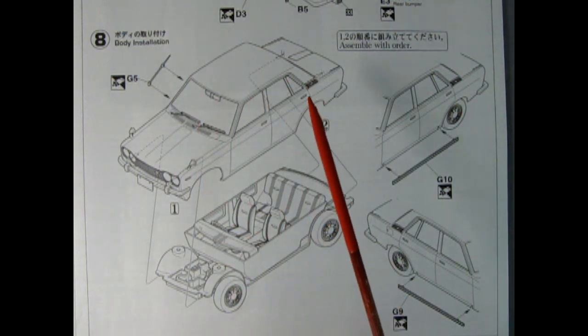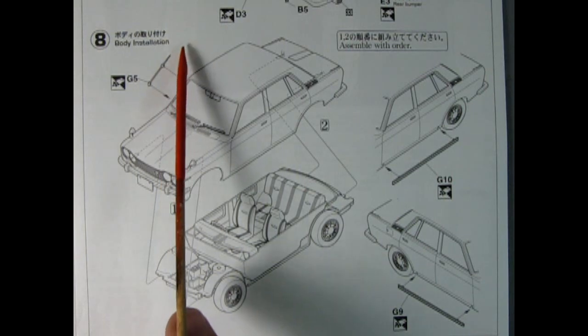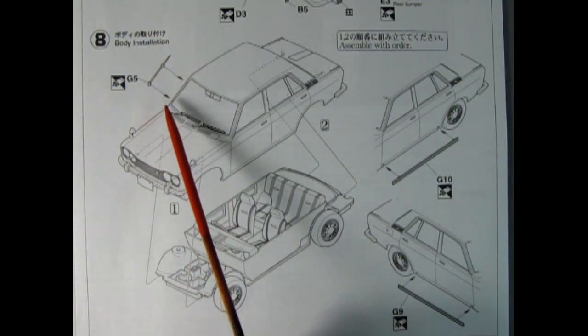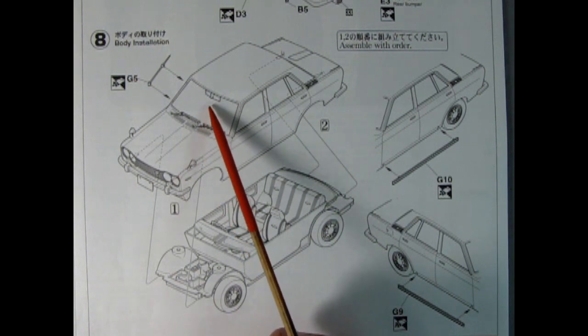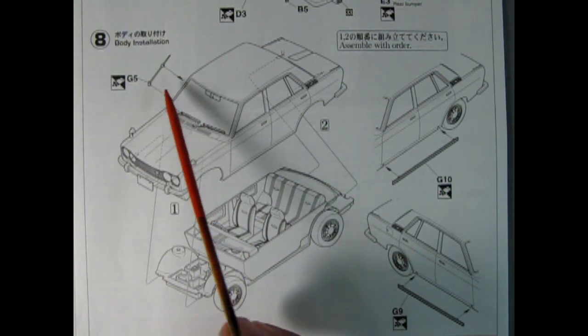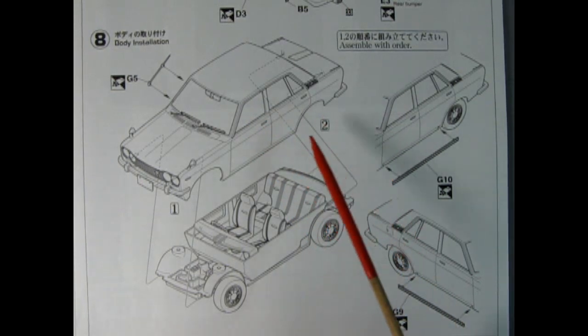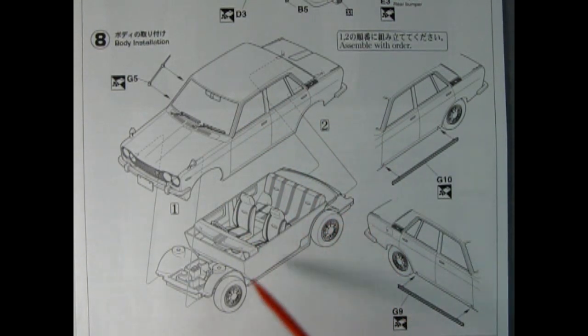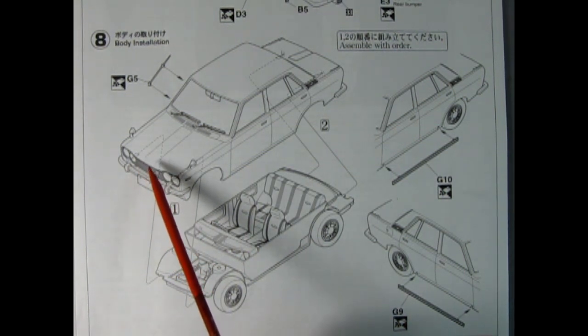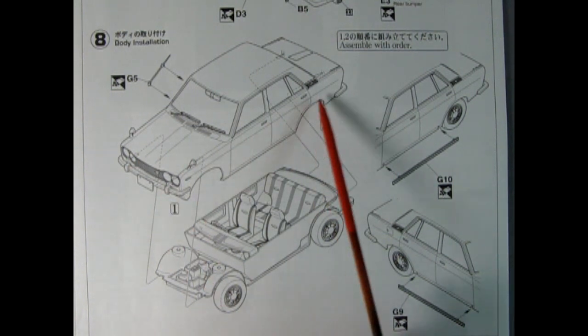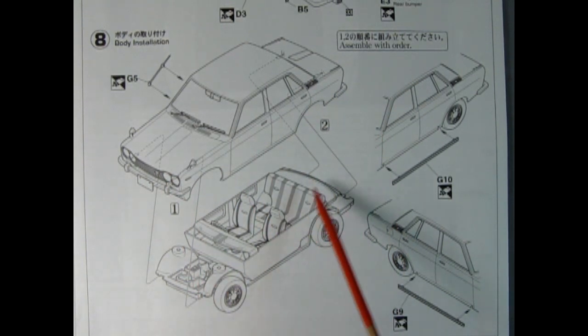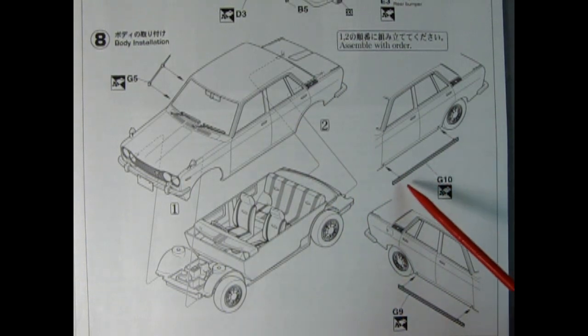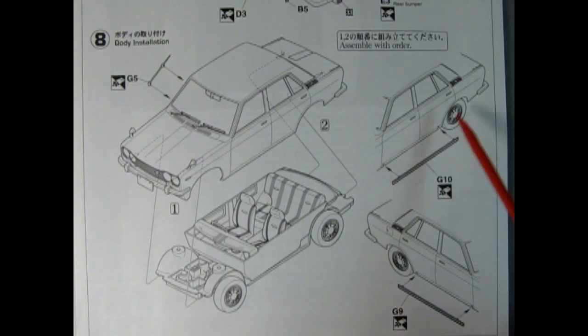In panel eight we get the body installation. How many of you remember these old antennas where you can pull them up from the top to extend them out, mounted right on the front windshield post. To get your body together there are tabs on the chassis which go into little holes up in front of the car. This is the assembly order so it goes in the front first and then you pry the back out a little bit and pop that into place. Here we have rocker panel moldings which will go along the bottom edge of the car.